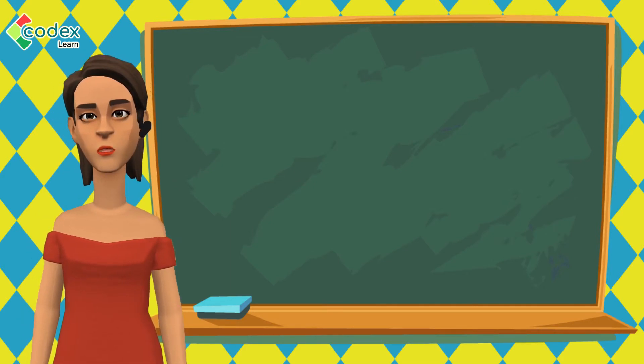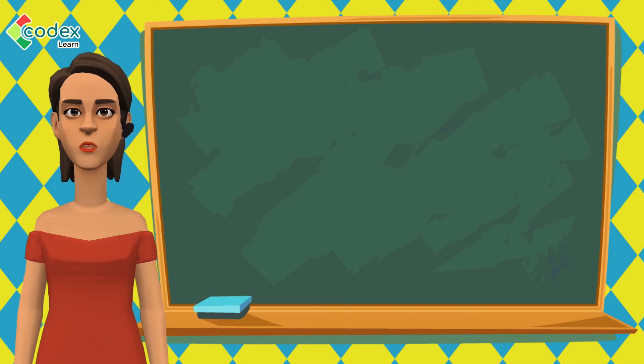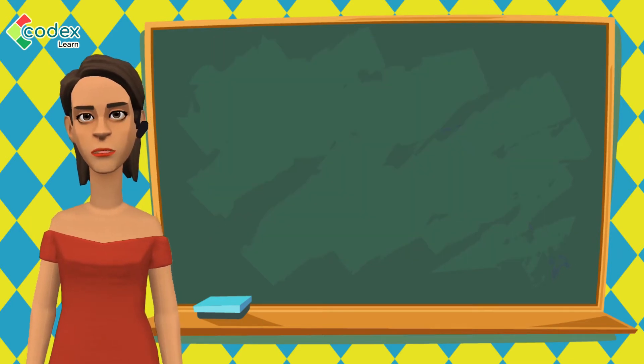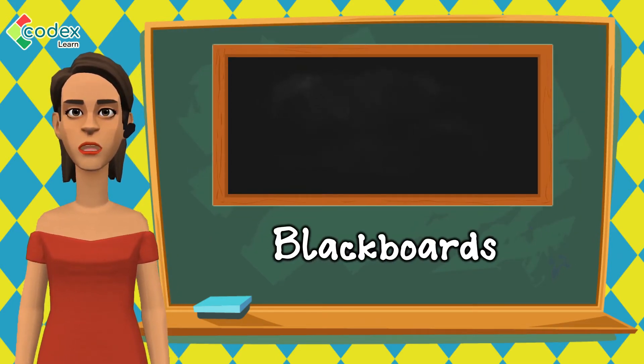By finding the area of our room, we can tell how big it is. We can also find the area of the table to know how wide the surface of the table is. We can also know the size of our blackboard by finding its area.